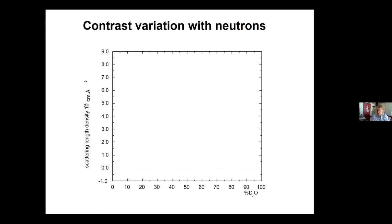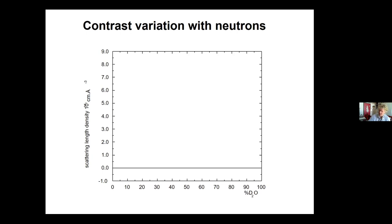A follow-up question about deuterating short DNA sequences - like 60 base pairs. You can, but what you've got to get hold of...